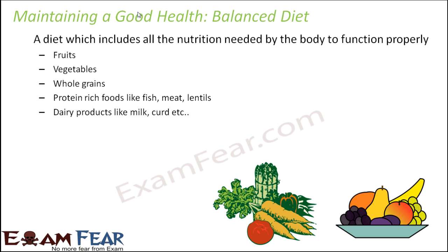To have a balanced diet, your diet should include fruits, vegetables, whole grains, protein-rich foods, and dairy products. Fruits and vegetables provide roughage, minerals, and vitamins. Whole grains provide carbohydrates. Fish, meat, and lentils provide proteins. Dairy products like milk, curd, and cheese provide calcium and fats. When you consume a variety of foods, your body gets all the nutrients it needs to maintain good health.